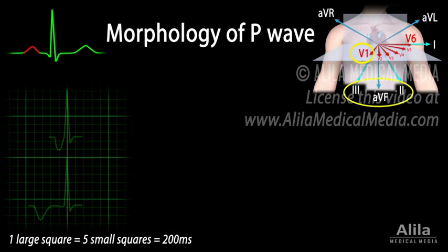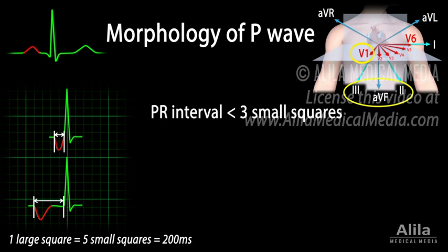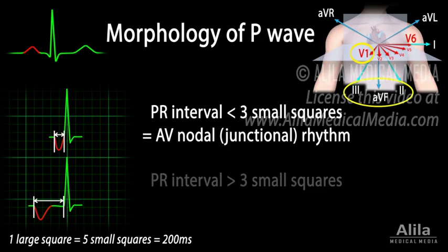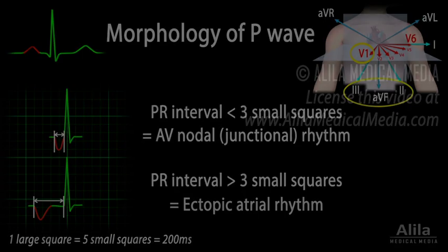P wave inversion in the inferior leads indicates a non-sinus rhythm. When this happens, measure the PR interval. If the PR interval is less than 3 small squares, the rhythm is started in the AV junction. If the PR interval is more than 3 small squares, the origin of the rhythm is within the atria.